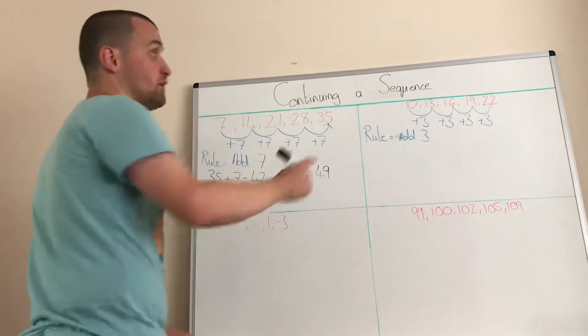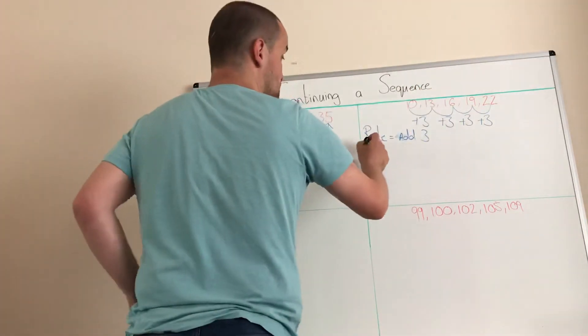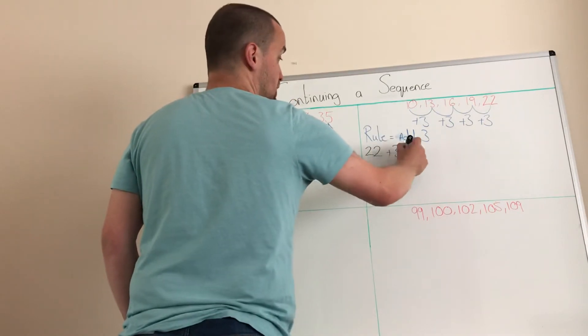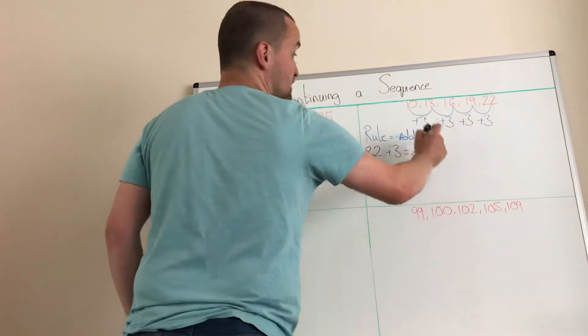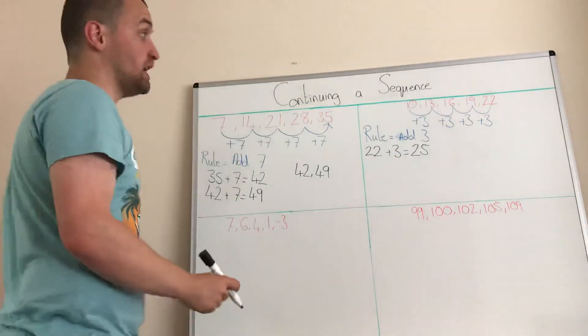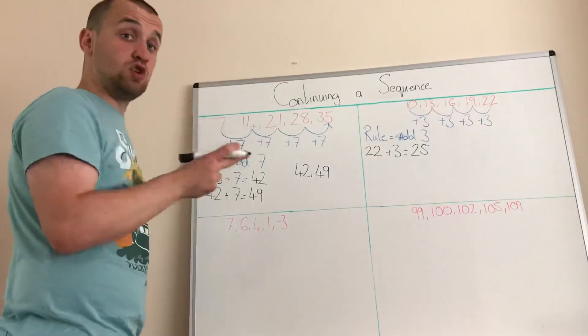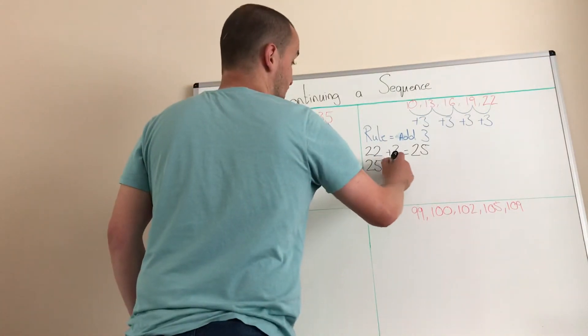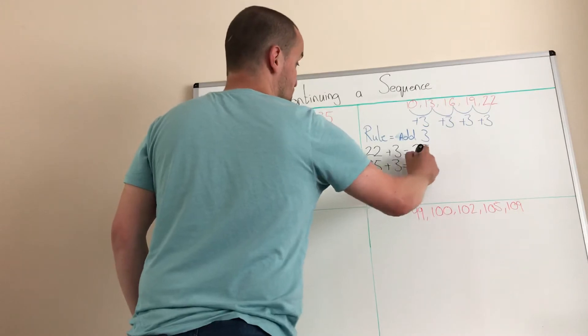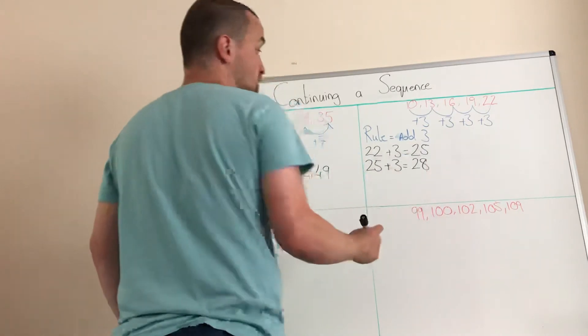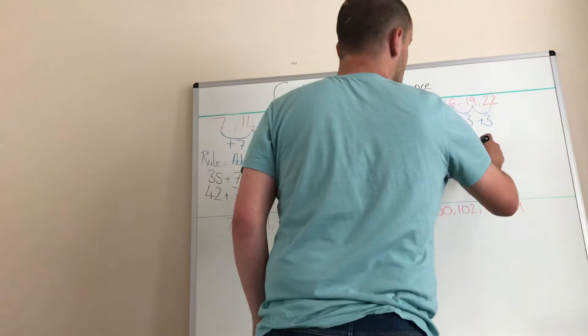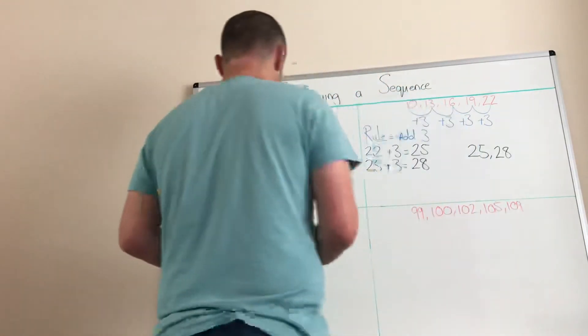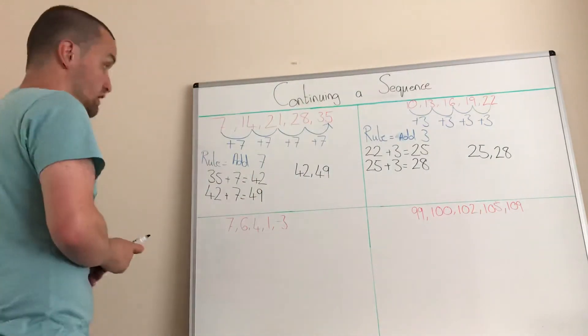So we take what we got at the end. Our last term was 22. We're going to add three because that's our rule and we get 25. So the next term in that sequence is 25. Now we want the next two terms in that sequence. So we're going to do 25 add three again, which is 28. So the next two terms in the sequence are 25 and 28.